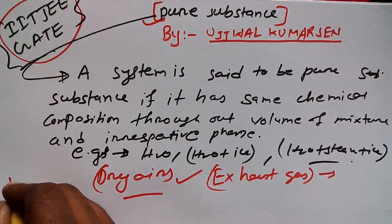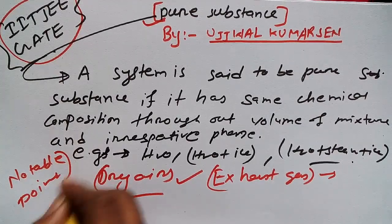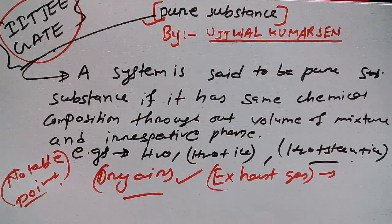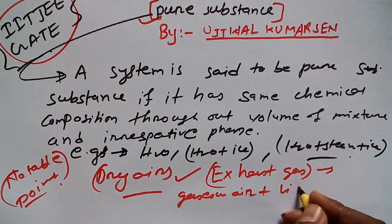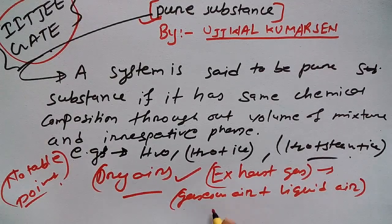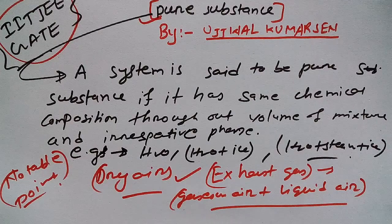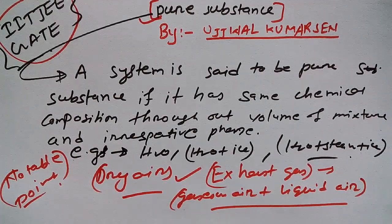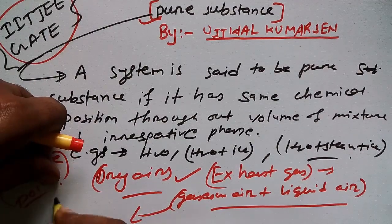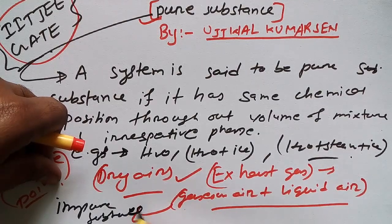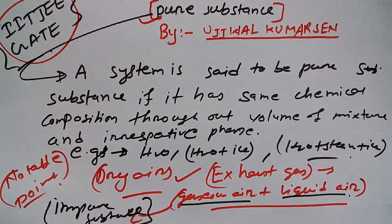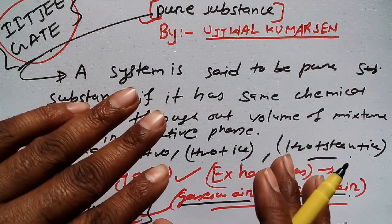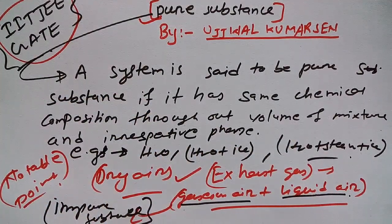The notable point is: if I say a mixture of gaseous air plus liquid air — is this an example of pure substance? No, this is not a pure substance; this is an example of an impure substance. Why? Because the composition of these two phases varies from place to place. That's why gaseous air plus liquid air is not a pure substance.